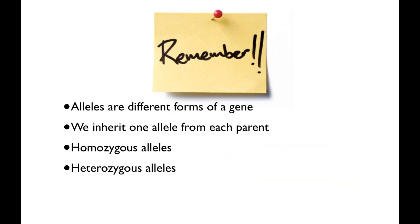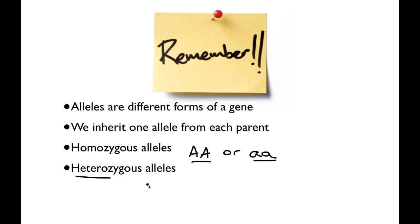I want to make sure everybody's comfortable with these terms. Alleles are different forms of a gene, and we inherit one allele from each parent. The alleles you inherit may say the same thing — if they're both dominant, we say you are homozygous dominant. They may also both be recessive. We use capital letters for dominant and lowercase letters for recessive. The other option is that you might inherit one dominant allele and one recessive allele, and we call that condition heterozygous — hetero just means 'other.'